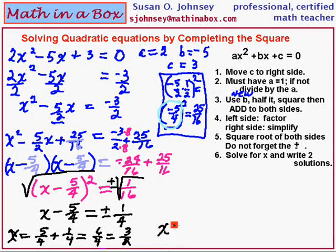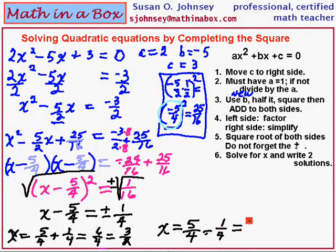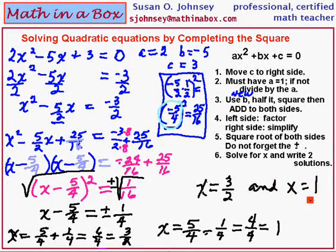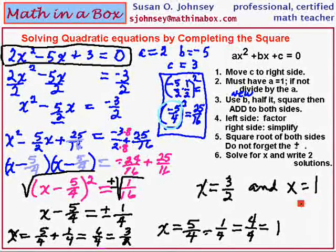That gives us 6 fourths, which reduces to 3 halves. For the second solution, we use the negative sign: 5 fourths minus 1 fourth gives us 4 fourths, which is 1. So our two solutions are x equals 3 halves and x equals 1. When your answers come out to be rational numbers — meaning no square roots — that means this problem could have been solved by factoring. You can go back to the original problem, factor it, and get the same two solutions.